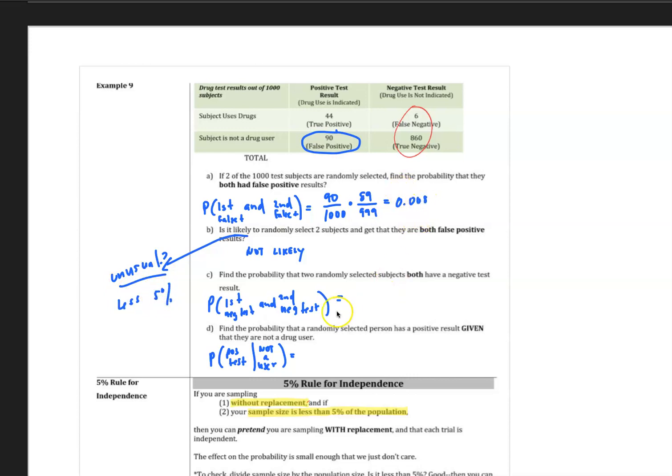Find the probability that two randomly selected subjects both have a negative test result. And so looking at a negative test result, here it is right here. In this case, you would get 866 over 1,000 times that. So probably the second one has a false negative test result, given that the first one did. That would be 865 over 1,000. You're going to get a very small number. So we can do that calculation real quick. Divided by 1,000 squared. You're going to end up with 0.749, or about 74% chance.